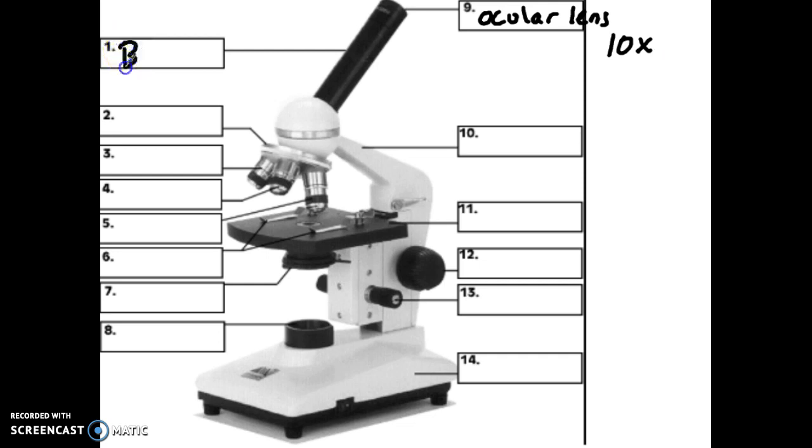Number one over here is the body tube. I don't necessarily know the function. It has to have a distance, I'm sure, between the two lenses for this to work. And the body tube just allows that distance to occur.